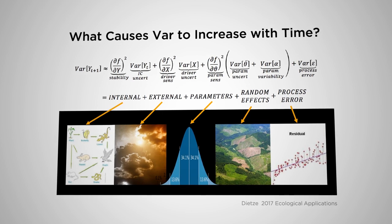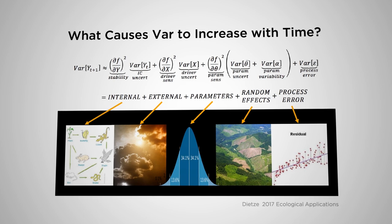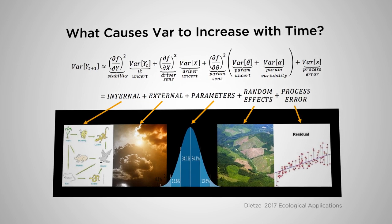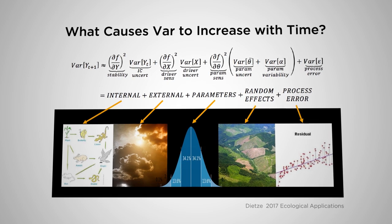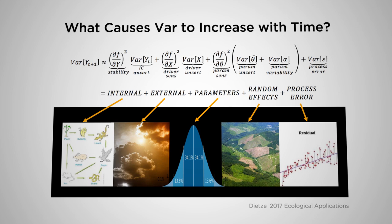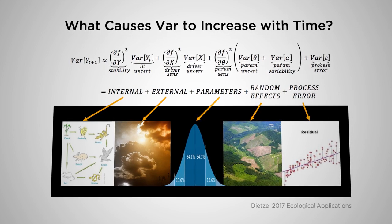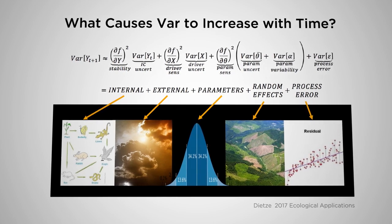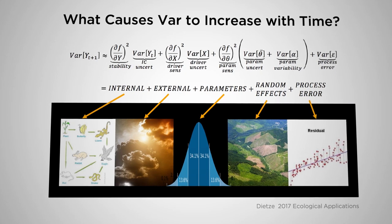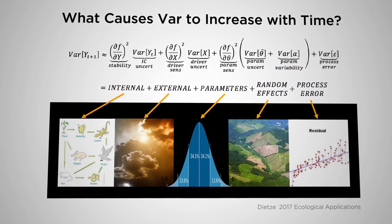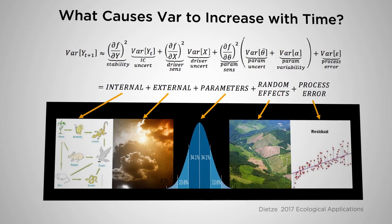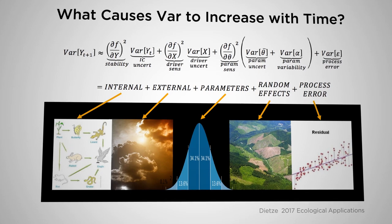The five uncertainty sources are: first, uncertainty about the initial conditions — what is our uncertainty about the current state of the system? Second, uncertainties related to the inputs or drivers — uncertainty about how the future environment will change and the sensitivity of our system to those environmental drivers. Third and fourth, parameter uncertainty, which breaks into the uncertainty about the mean value of parameters and how those parameters vary — capturing unexplained heterogeneity like year-to-year, site-to-site, or individual variability that we can quantify but can't yet explain. And finally, process error — the unexplained components.